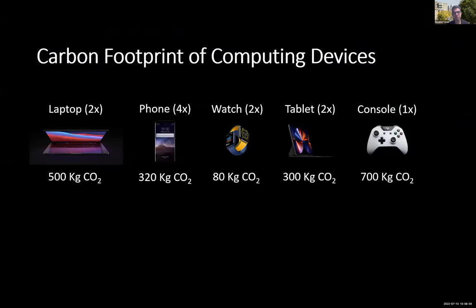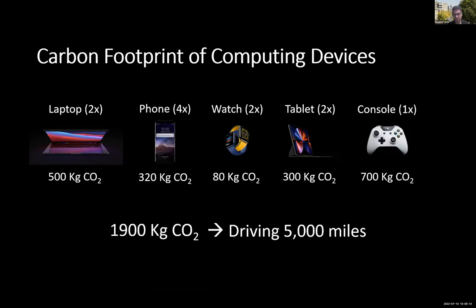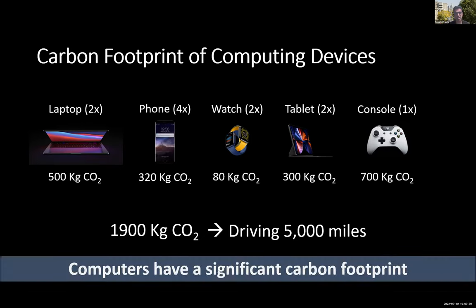Climate change is a problem and we are contributing to it. A lot of the devices we use have a huge carbon footprint. This picture shows a couple of devices used in an average American household, and all of this is equivalent to driving five thousand miles. The cost shown includes both embodied cost and operational carbon emissions produced by these devices.